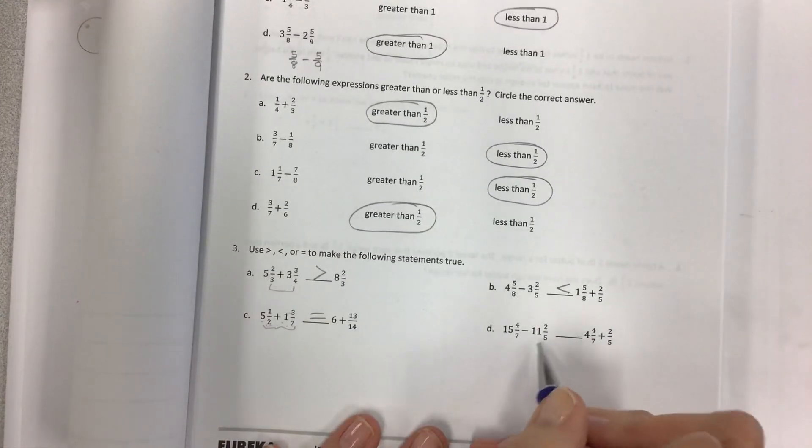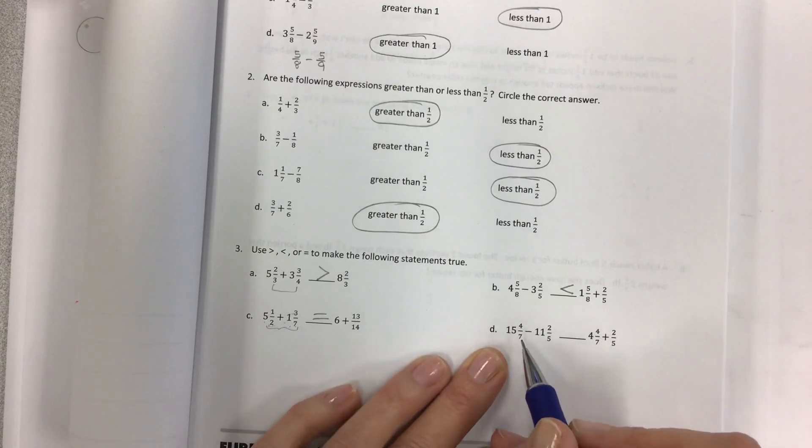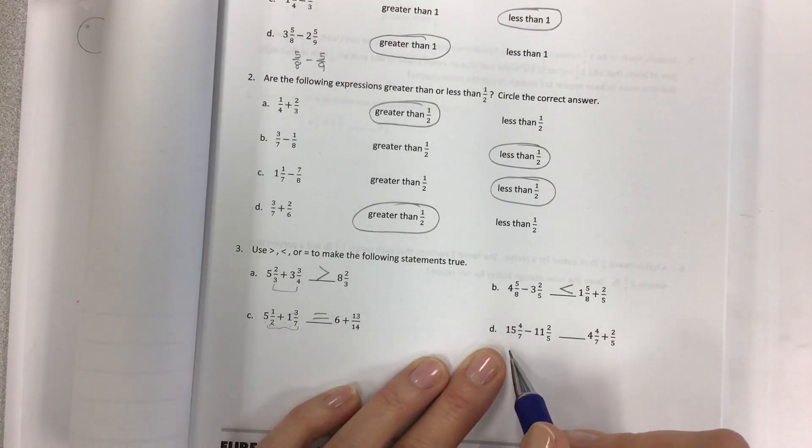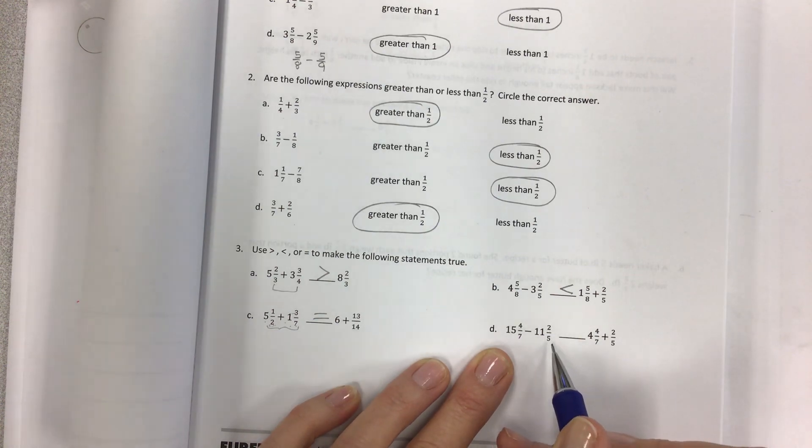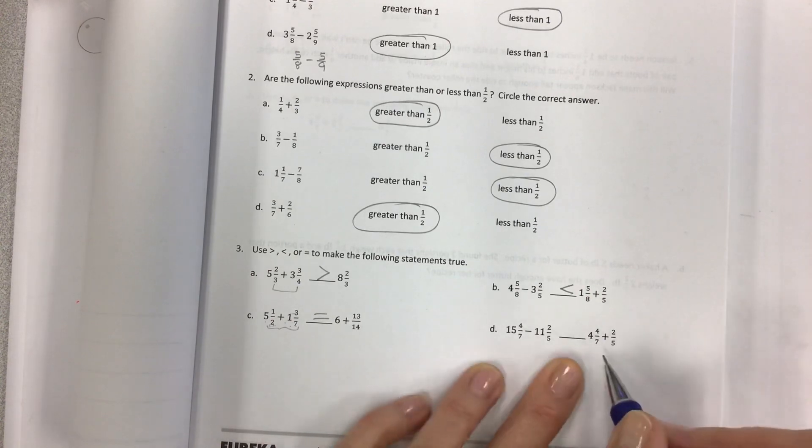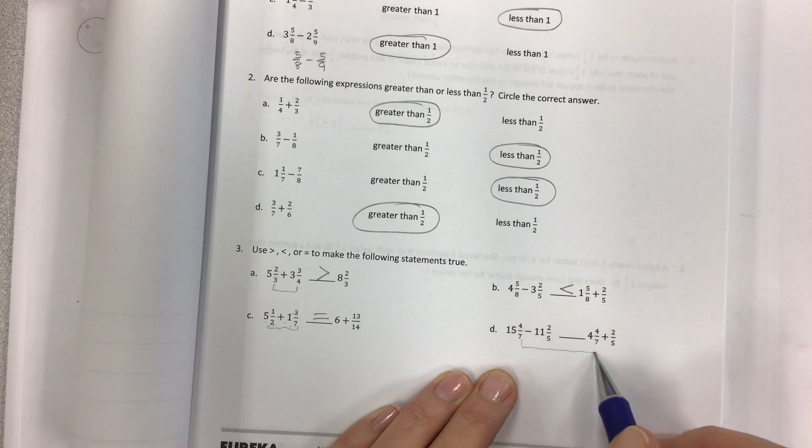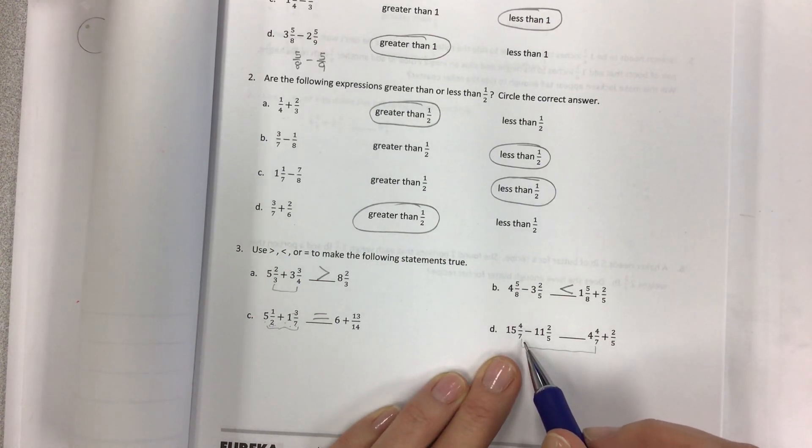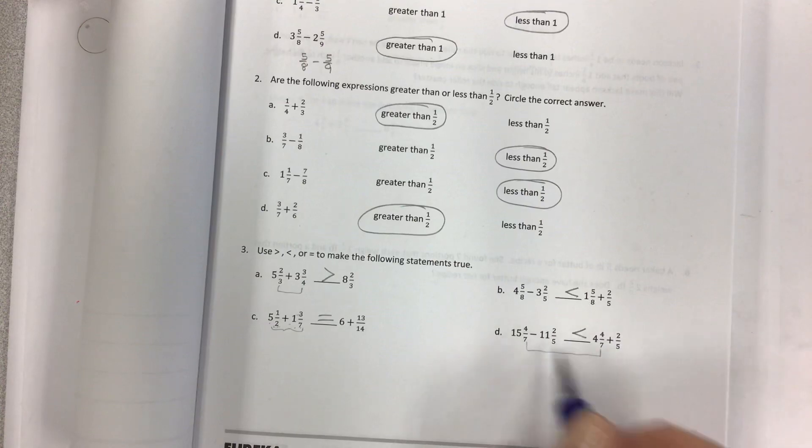Then fifteen and four sevenths minus eleven and two fifths as compared to four and four sevenths plus two fifths. So again, you can do the subtraction and end up with four, but you still have four sevenths, which is just a little bit more than half, and then you have to take away two fifths, which is almost half. And compare that to the four, four and four sevenths plus two fifths. And so I'm looking at these and I'm saying, okay, well here I have a subtraction problem and here I have an addition problem. And so we're going to end up with more on this side because I'm adding it, I'm not taking it away.